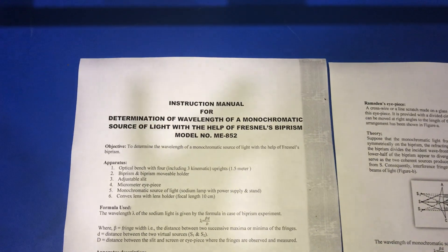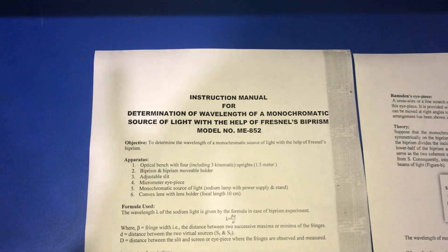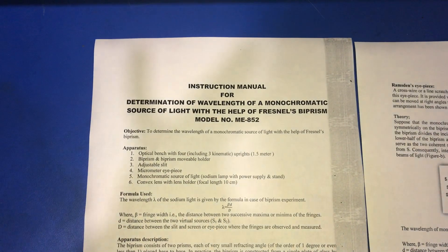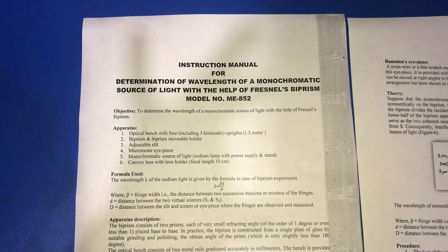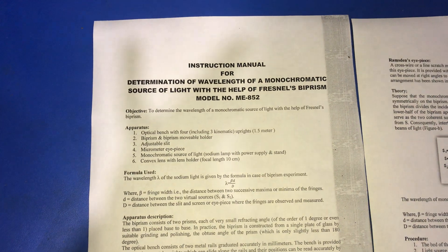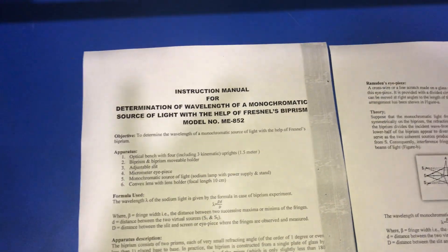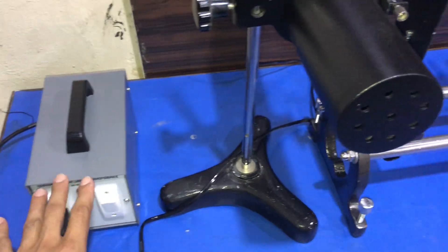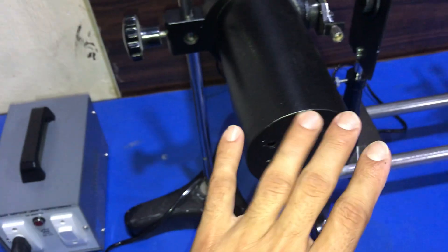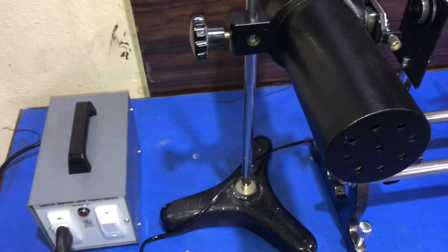Hello everyone, today I'm going to demonstrate how to determine the wavelength of a monochromatic light with the help of Fresnel biprism. In order to perform this experiment, we require a monochromatic light source, which is a sodium light source.